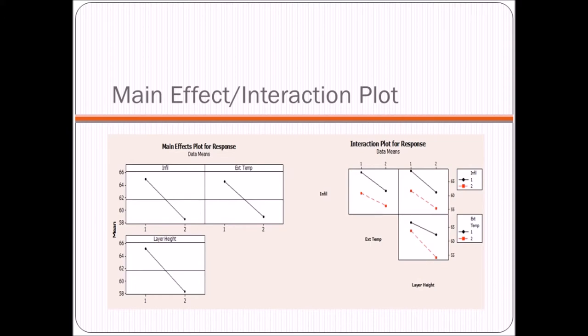On the right, we have our interaction plots. Now, the way this works is basically if these lines were perfectly parallel to each other, then that would signify that there is no interaction. And if you remember from our ANOVA analysis, the only statistically significant interaction was the interaction between extrusion temperature and layer height. And that's just verified here by this graph. You can see that those two lines are the least parallel, which just backs up that previous analysis.